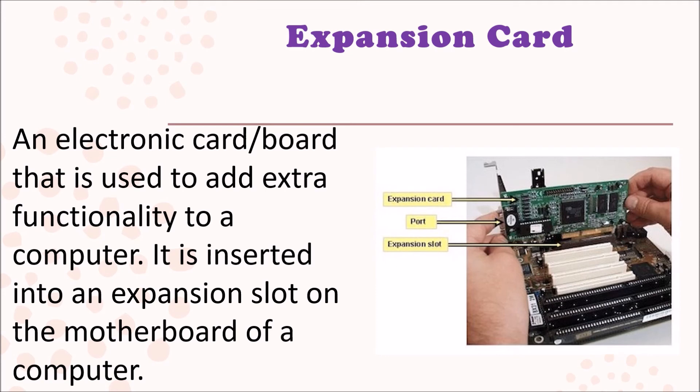Remember earlier when we spoke about the motherboard and its superpower of connectivity and communication? Now we're going to look at some of the motherboard's sidekicks. The first one is the expansion card — this is an electronic card that helps to add extra functionality to a computer. For example, if your motherboard did not come with onboard graphics but has an expansion slot, you could simply put in a graphics card and your computer would then have onboard graphics.